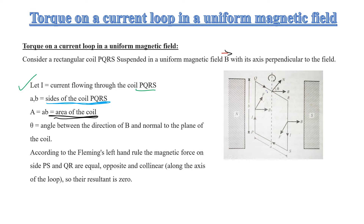What is theta? Theta is the angle between the direction of magnetic field vector B and the normal to the plane of the coil. Normal means a line at 90 degrees to the plane.